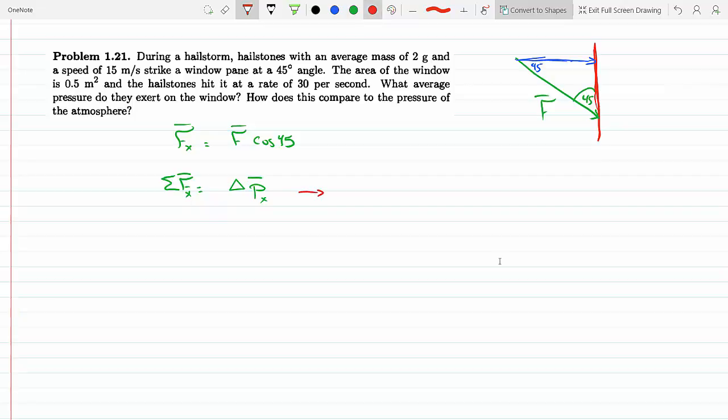So the only component in the X is F cosine 45 degrees, and this has to equal the mass times the change in speed. This is the change in V_X. So this would be V_2X minus V_1X.